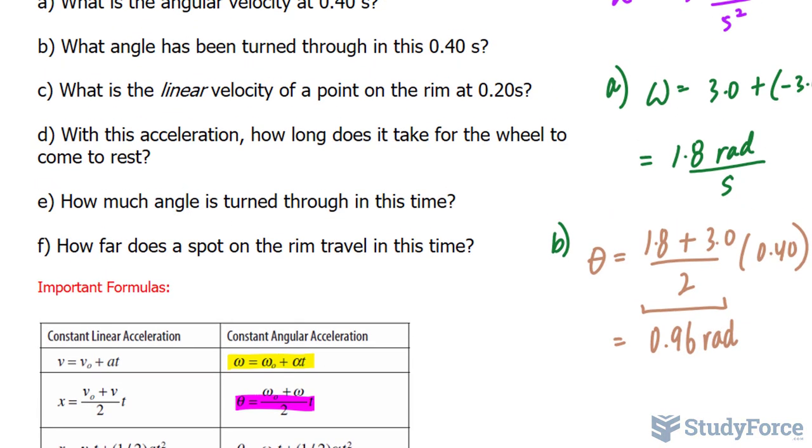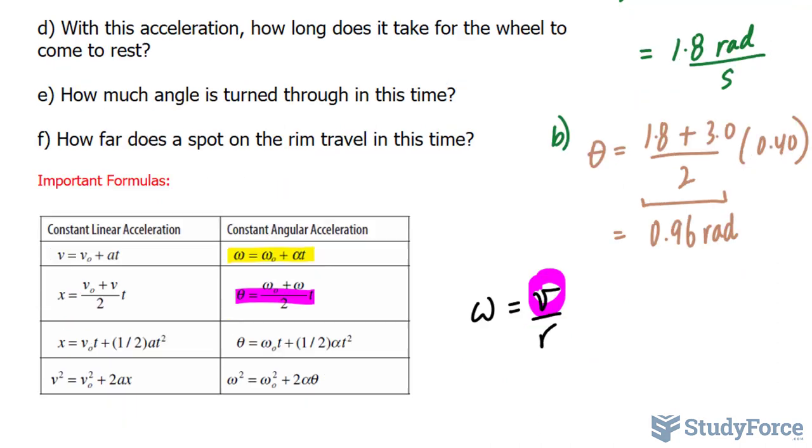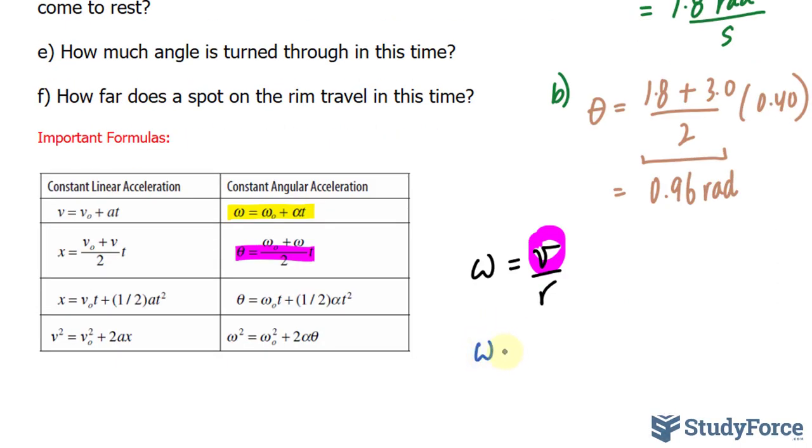What is the linear velocity of a point on the rim at 0.2 seconds? Now, linear velocity and angular velocity are related using this formula. Where angular velocity is equal to the linear velocity divided by the radius. So, we're looking for this part, V. I'll multiply both sides by R so that I isolate for V. I'll end up with omega times R is equal to V.